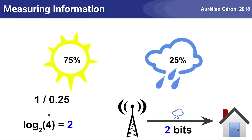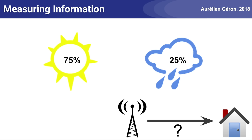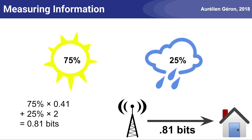Now the log of 1 over x is equal to minus log of x. So the equation to compute the number of bits simplifies to minus the binary log of the probability, 25%. Now if the weather station tells you it's going to be sunny tomorrow, then your uncertainty hasn't dropped much — in fact, you get just over 0.41 bits of information. So how much information are you actually going to get on average? There's a 75% chance of sunny, giving 0.41 bits, and a 25% chance of rainy, giving 2 bits. So on average, you will get 0.81 bits of information from the weather station every day.